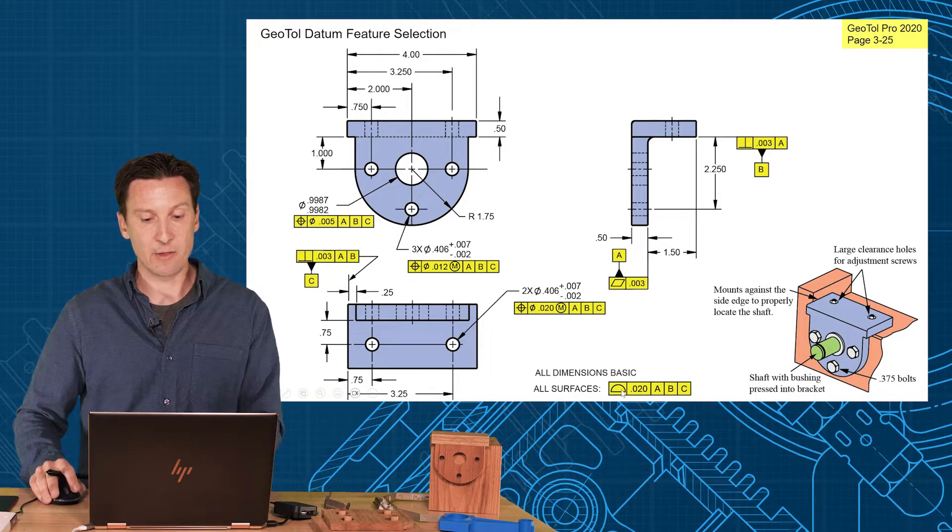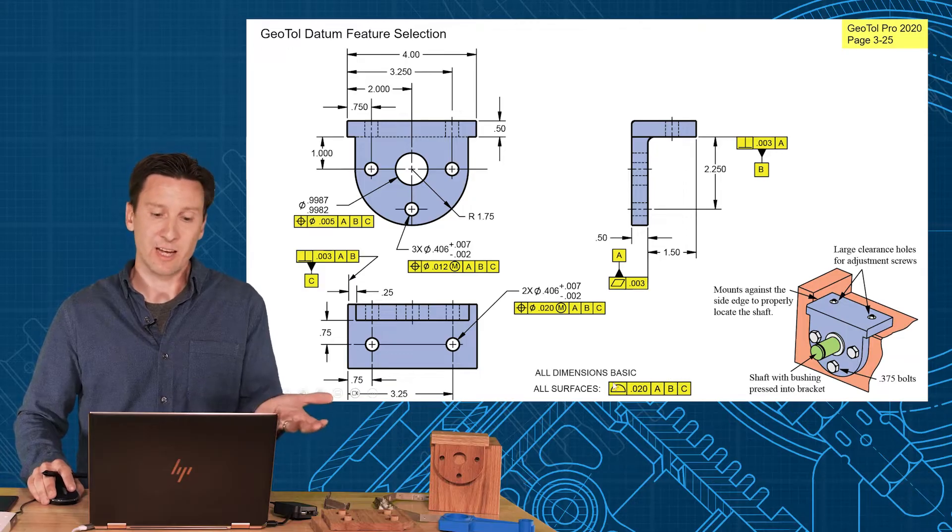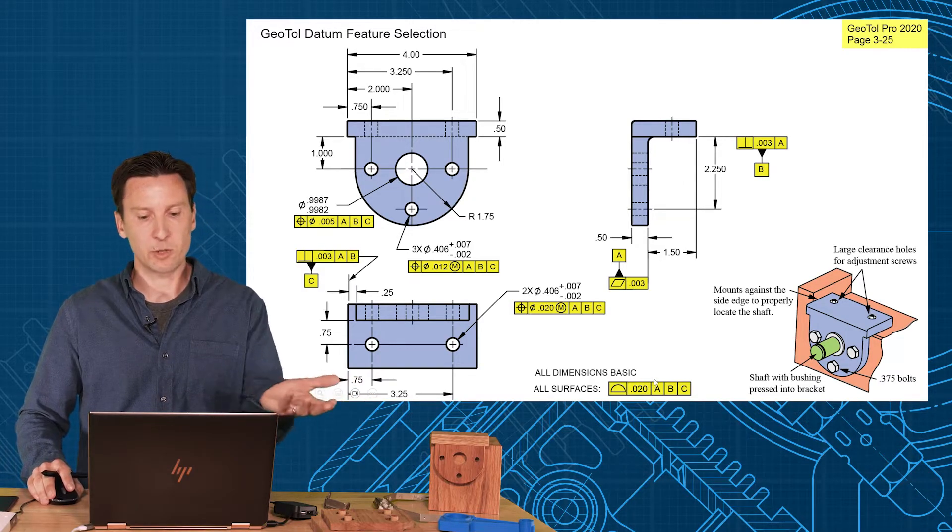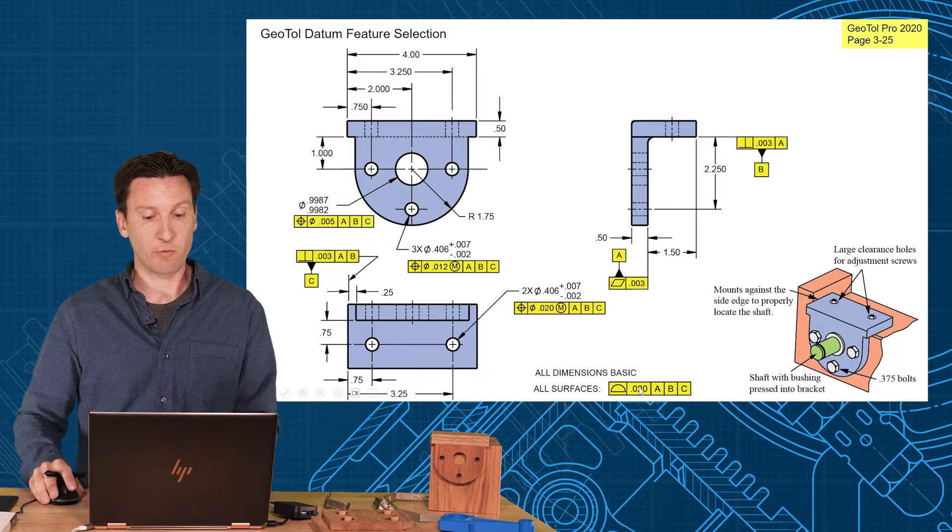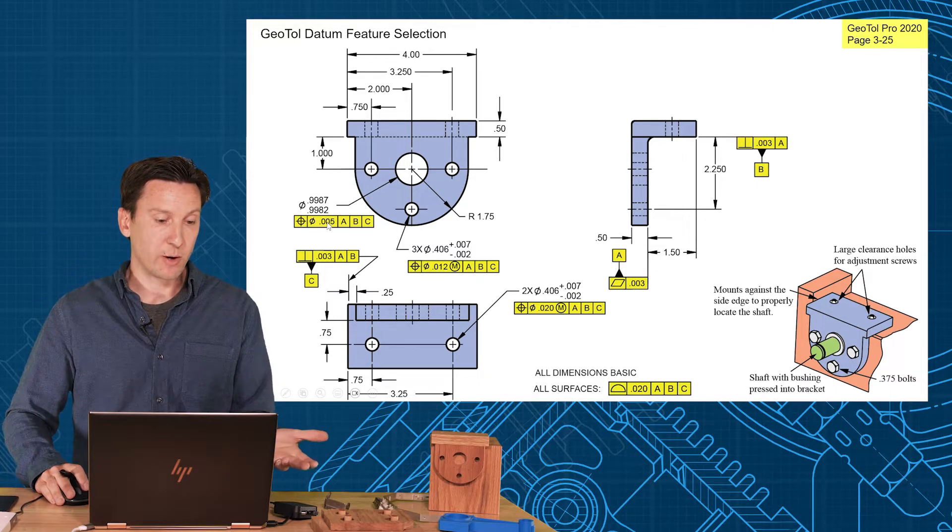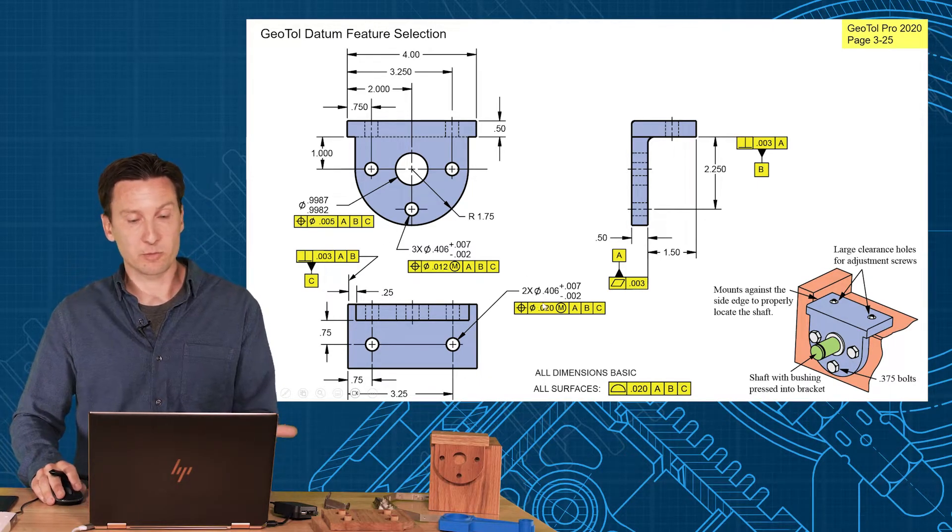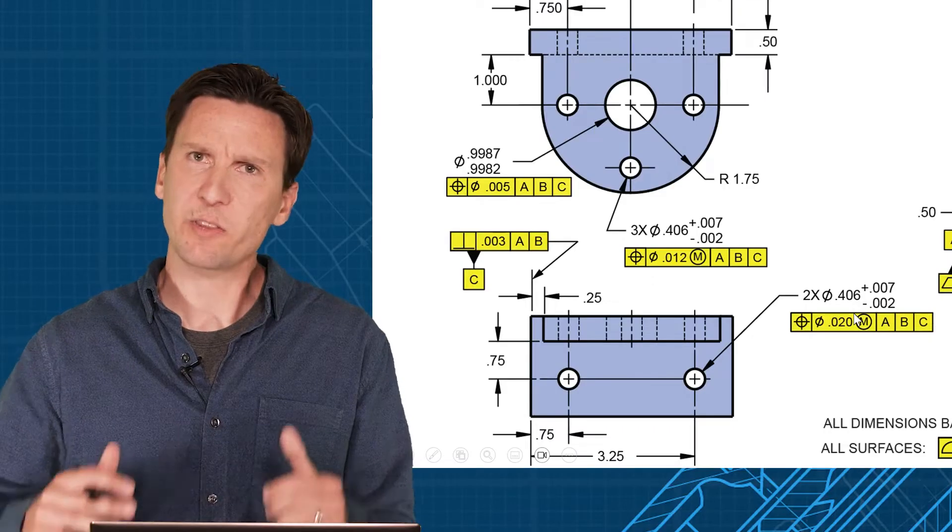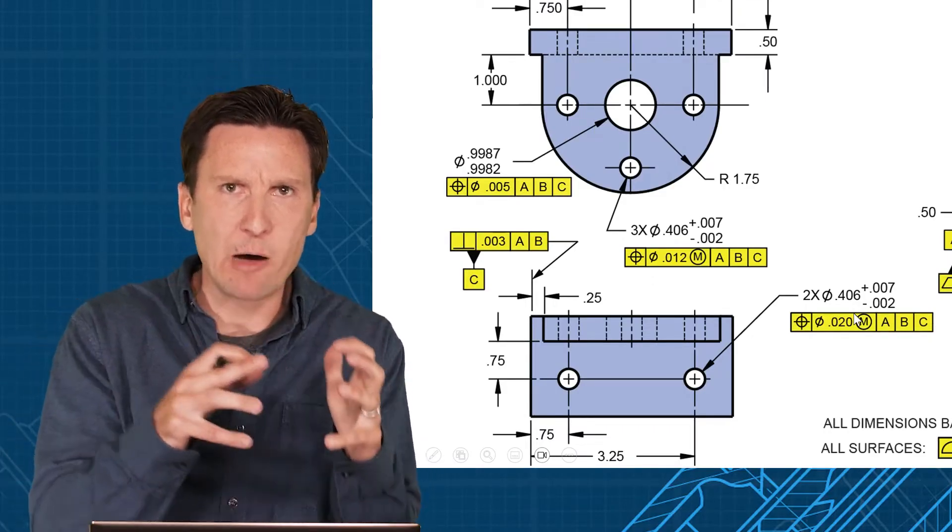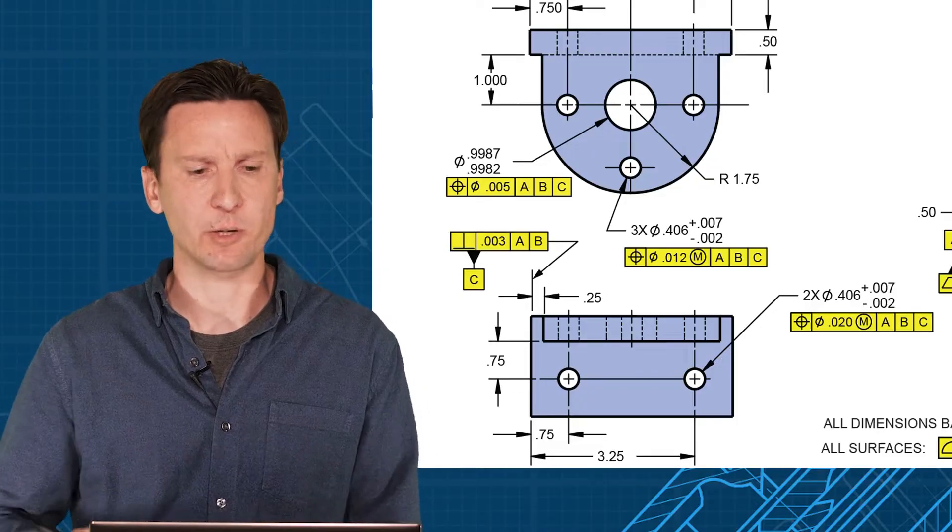Position these holes to A, B, C. And then profile all of our surfaces to A, B, C. Since our surfaces weren't very important, we can just let that be covered by our general block tolerance, profile 20. But important holes will have a tighter tolerance. Less important holes, maybe a little bit looser tolerance. But the important thing is that datum reference frame. How does it mount? How does it fit in the assembly? Select those based on the function.